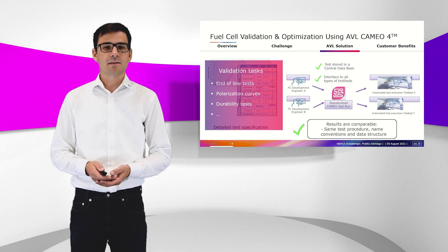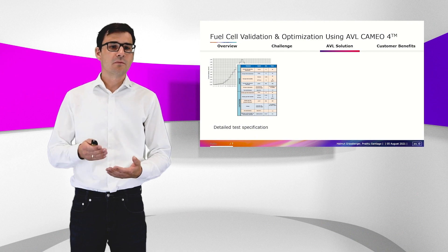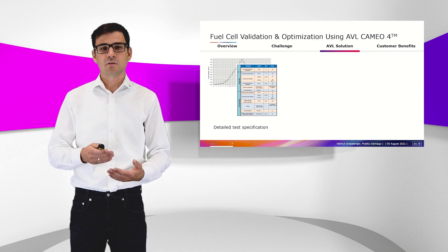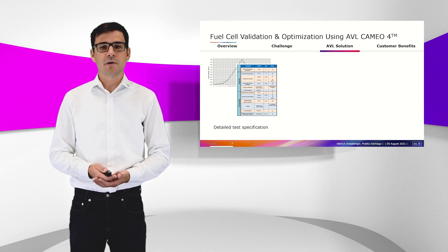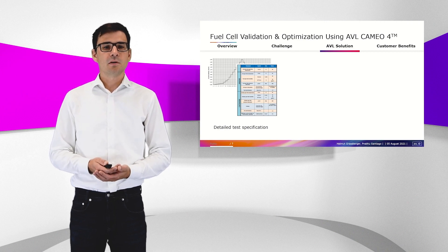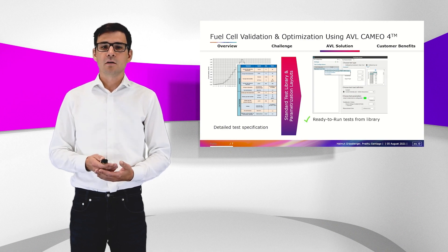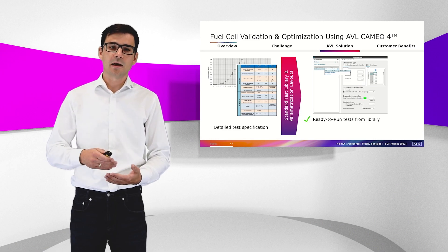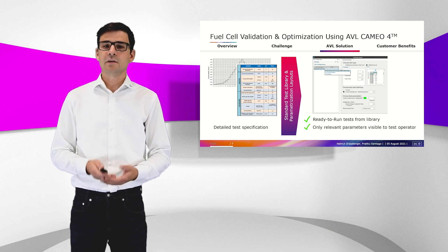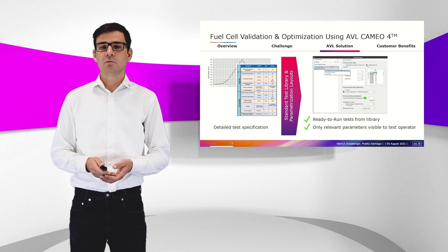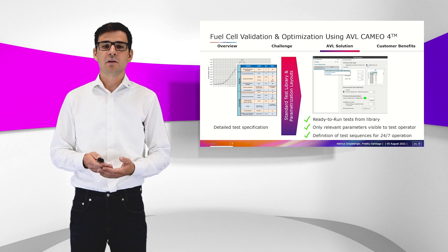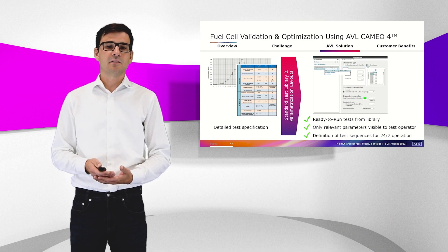If we have a look at these kinds of tests, they are very specific. Many temperatures, pressures, and so on need to be defined. To help the operator reduce complexity, AVL and Cameo offer a layout concept where ready-to-run tests can be dragged and dropped from a library, and only relevant parameters are visible to the testbed operator. It is also very easy to define test sequences for 24/7 operation.